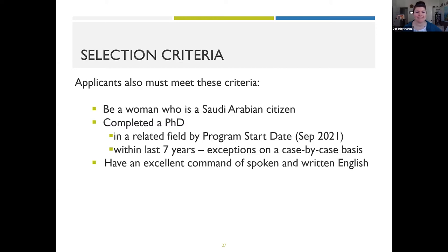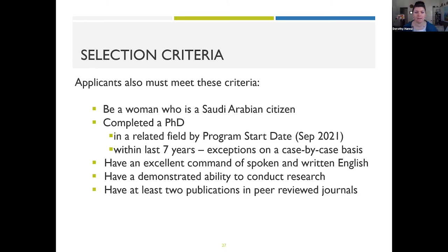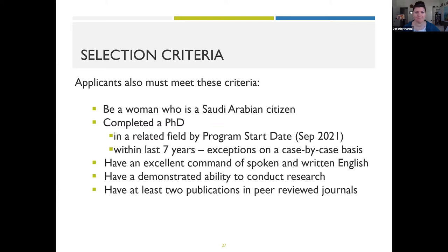To succeed at MIT, you must have an excellent command of spoken and written English and a demonstrated ability to conduct research. MIT is a very hands-on, research-focused institution, and people who are experienced and interested in that will get the most benefit from their time here. You also must have at least two publications in a peer-reviewed journal to submit with your application. Finally, you need to be working in a field where there is also an MIT faculty member currently doing research, so we can match you with a great mentor.